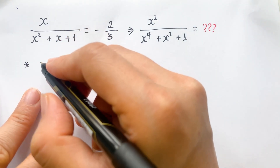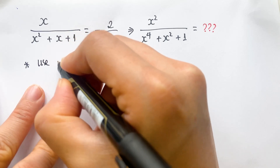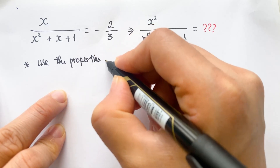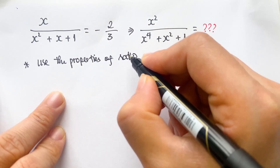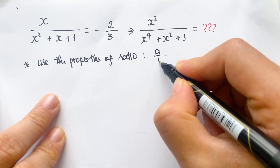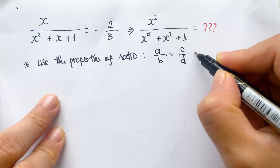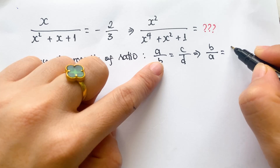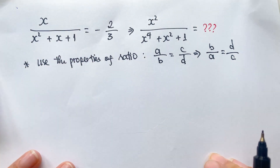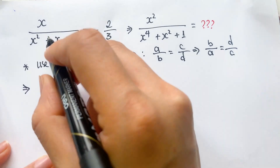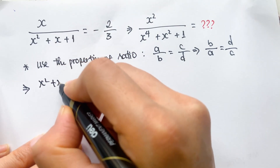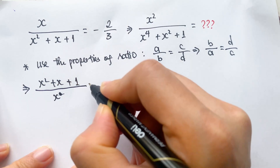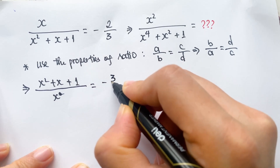First, everyone can use the properties of ratio. Using the property of ratio, we can have a over b equals c over d, and you can write b over a equals d over c. Then you can write x squared plus x plus 1 over x equals minus 3 over 2.